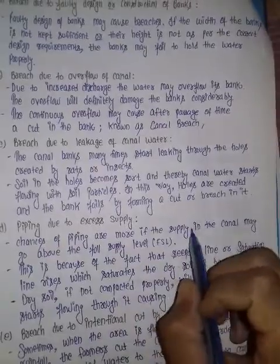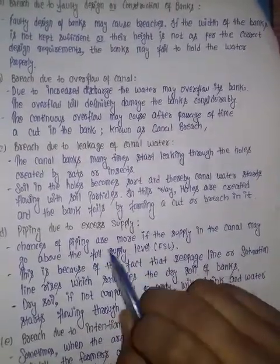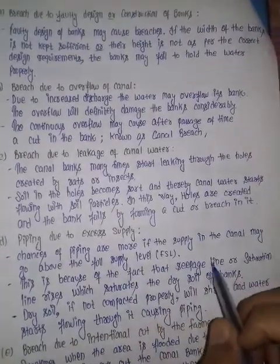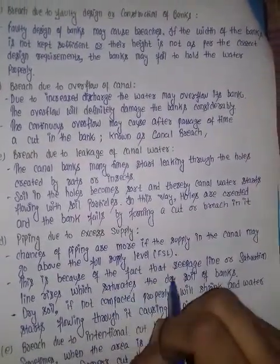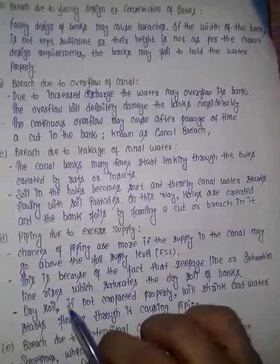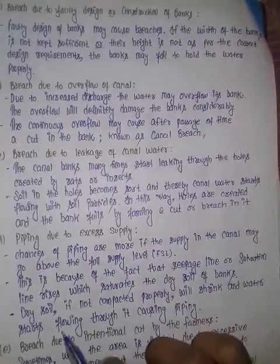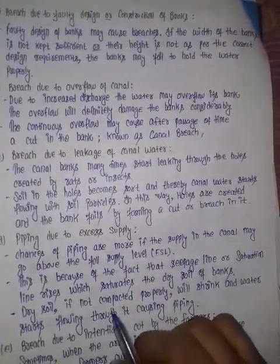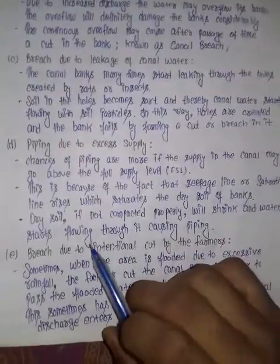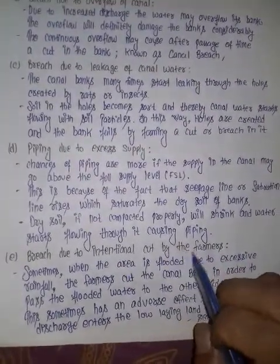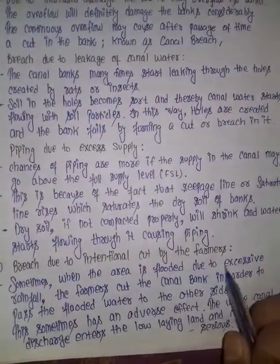The next reason is piping due to excess supply. Chances of piping are more if the supply in the canal goes above the full supply level. This is because the seepage line or saturation line rises, which saturates the dry soil of the bank. This dry soil, if not compacted properly, will shrink and water starts flowing through it, causing the piping process.